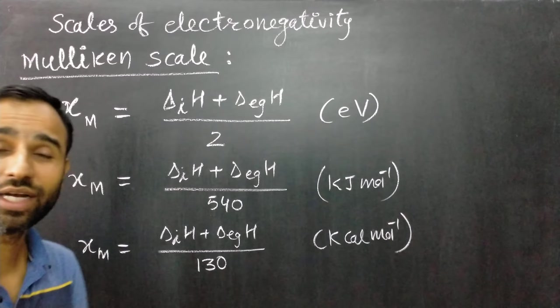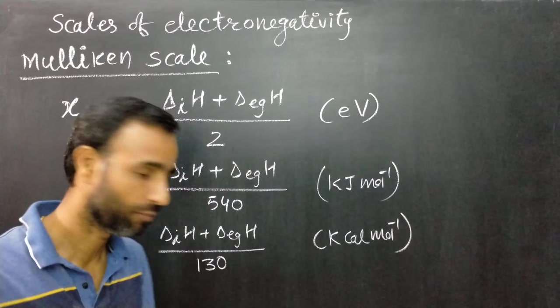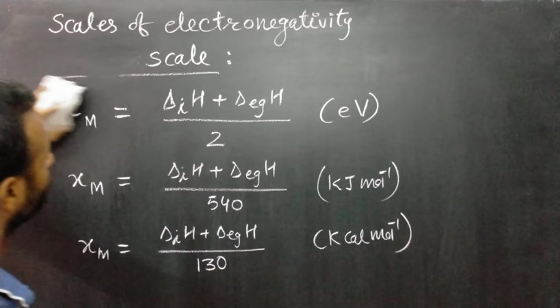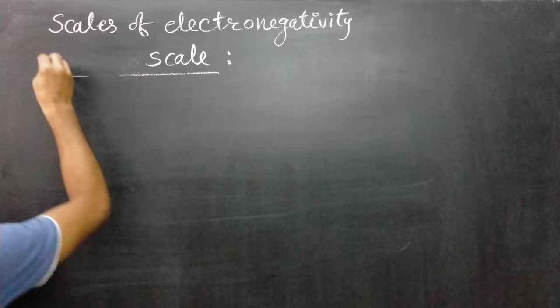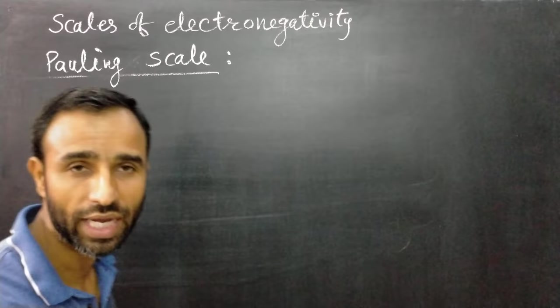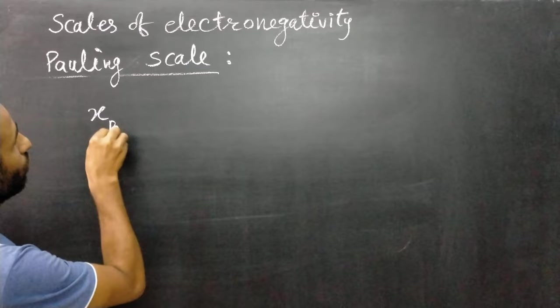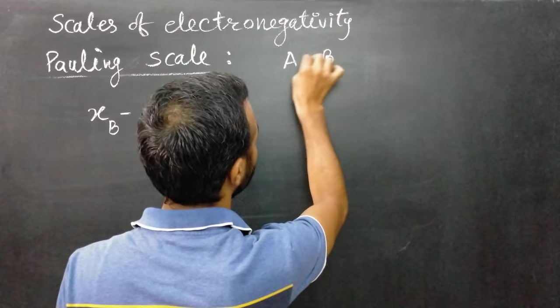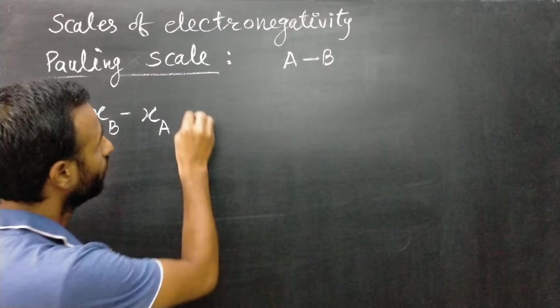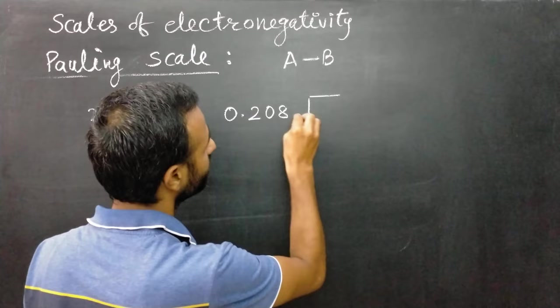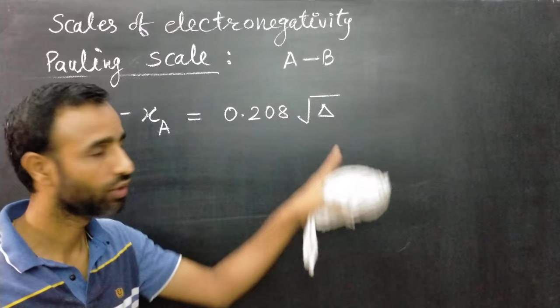The second and most commonly used scale is the Pauling scale. Linus Pauling gives the scale of electronegativity. If we have two atoms A and B forming a bond, then the difference in electronegativity between these two is equal to 0.208 multiplied by the square root of delta.